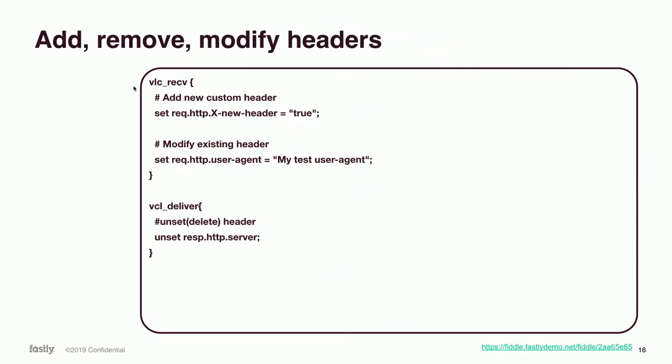Let's start with a very simple code example. In vcl_recv — which runs when we receive the request from the end user — first, we add a custom header: set req.http.X-New-Header = "true". This adds the header to the request going to the origin. The second line modifies an existing header — we can override existing headers, so in this example we override the User-Agent to "My Test User Agent". The third section is under vcl_deliver, which modifies response headers from our server to the end user.